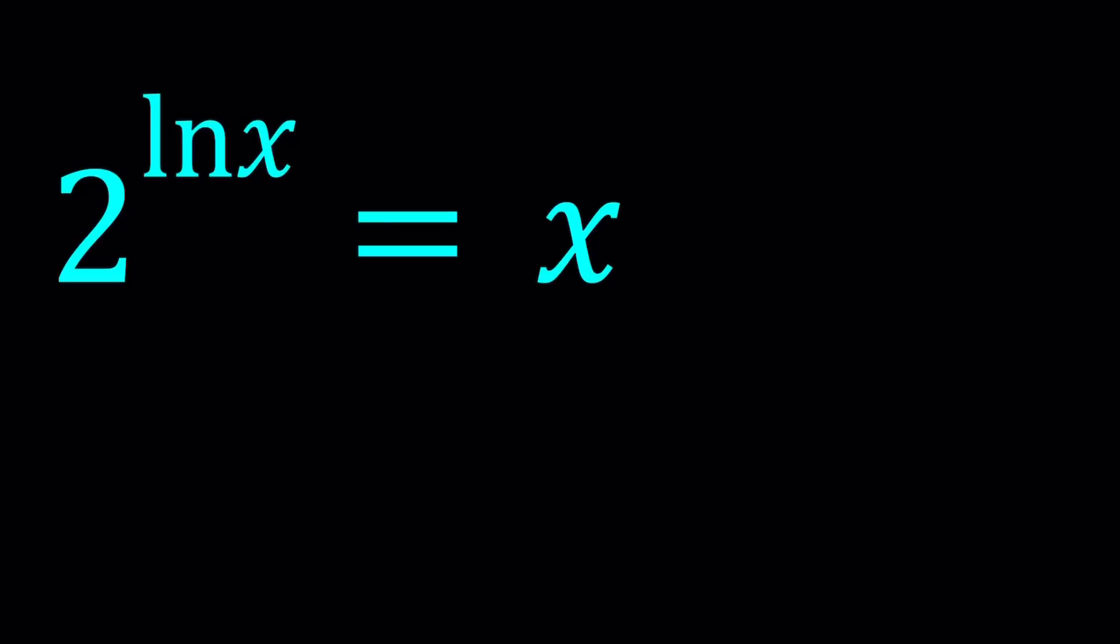So let's go ahead and use a method that is very common for log equations, especially when you have a variable in the exponent. And that is taking the log of both sides. I have the base 2 here, so I could probably take log base 2, but since I have ln x in the exponent, I could also use the natural log. So let's go ahead and natural log both sides. ln 2 to the power ln x equals ln x.